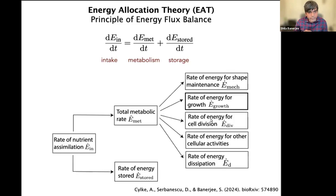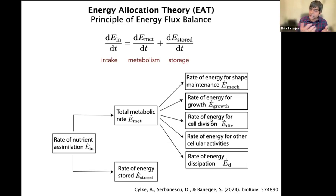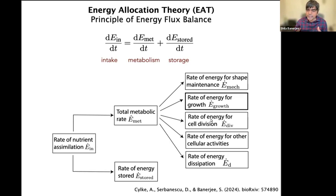The energy used by the cell to drive metabolic processes can be used for different tasks. Some fraction is for maintenance of structure and shape, some to drive growth, some for cell division — the reproduction of bacteria — and some is lost as heat. Depending on your need, you can add other sectors; for example, to model bacterial locomotion, you can add an energy sector corresponding to movement. This is a very general framework where, depending on your need, you can add different things.